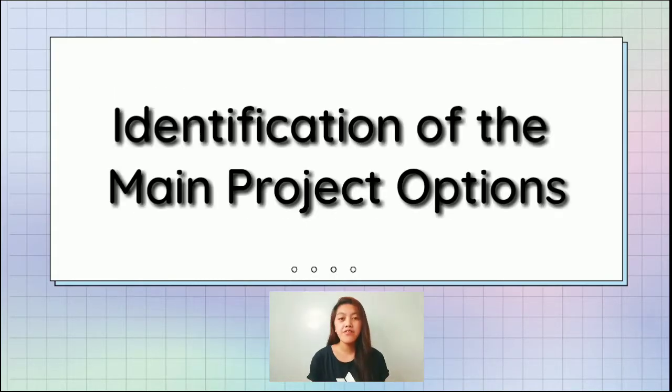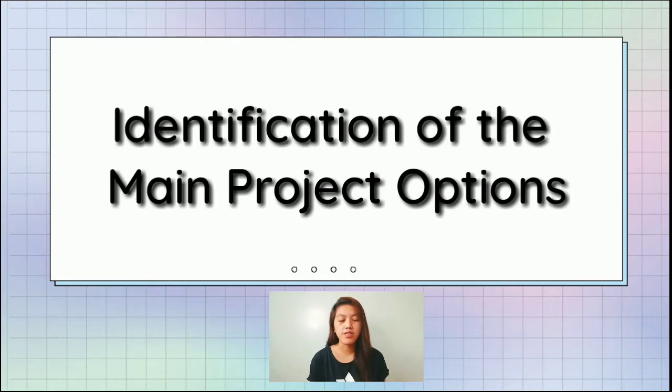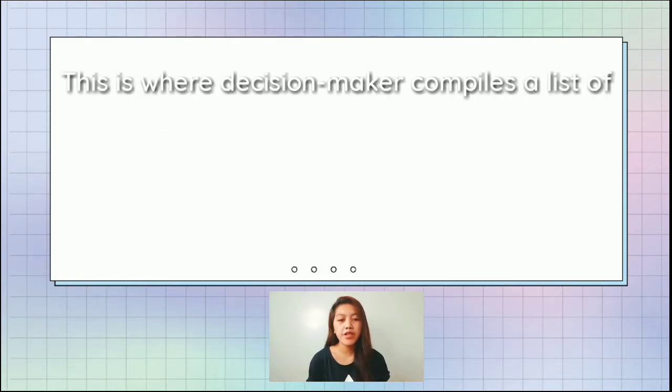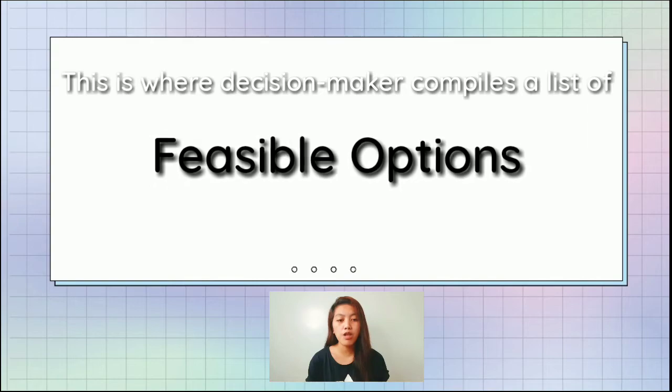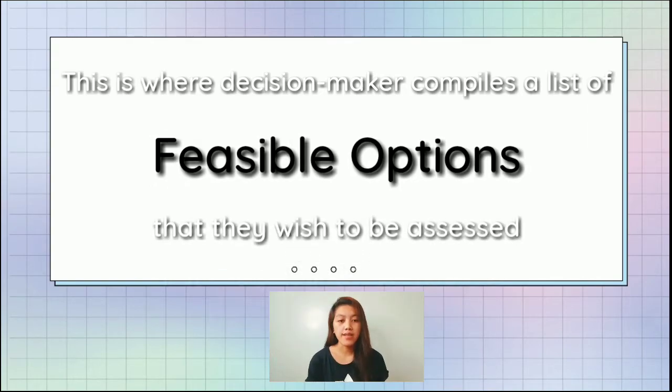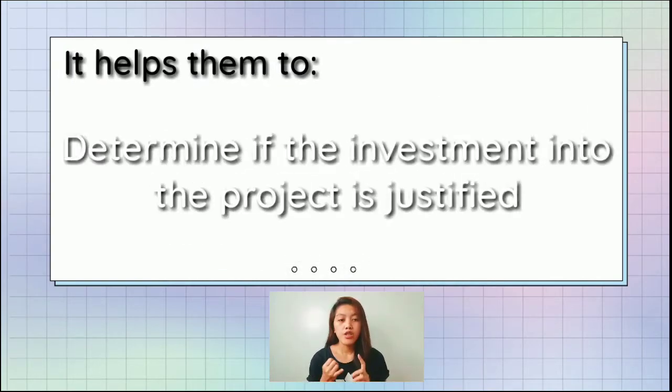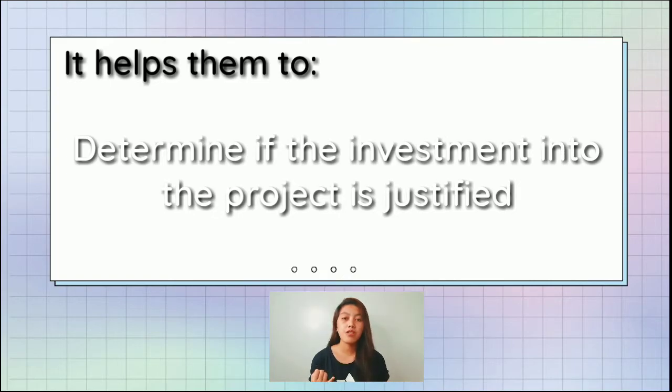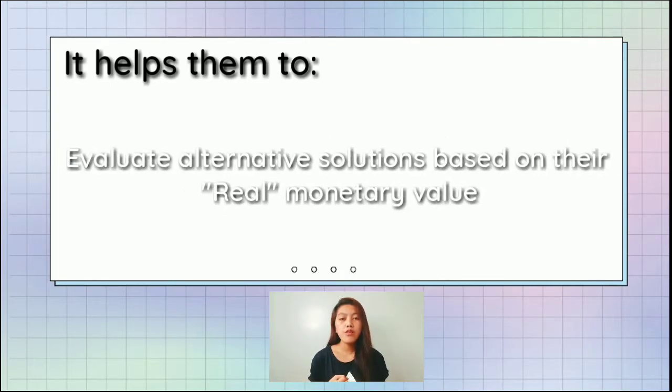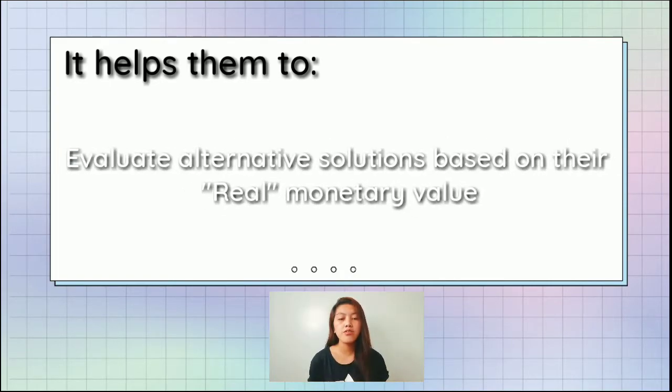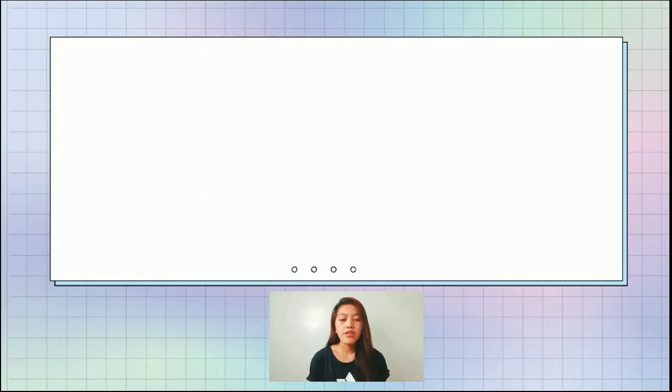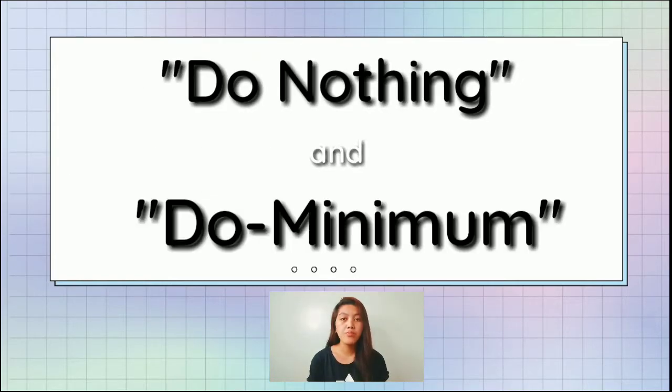Let us first discuss the identification of the main project options. This is where the decision-maker compiles a list of all feasible options that they wish to be assessed. It helps them to determine if the investment into the project is justified and to evaluate alternative solutions based on real monetary value. This includes the do-nothing and the do-minimum options.